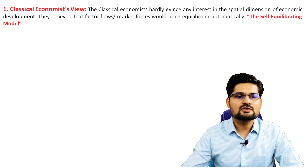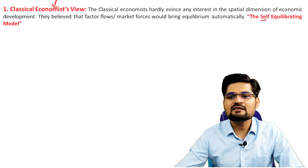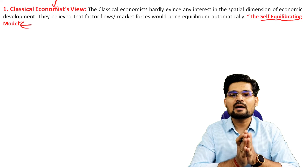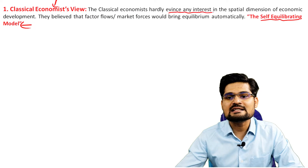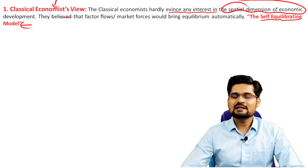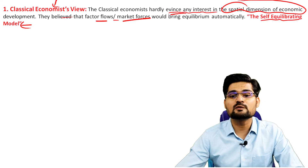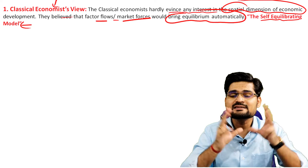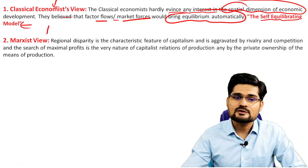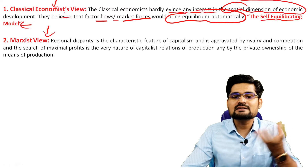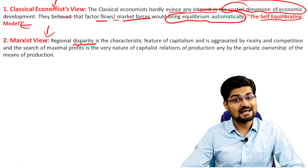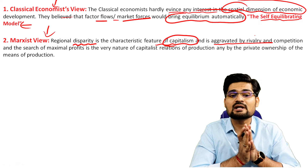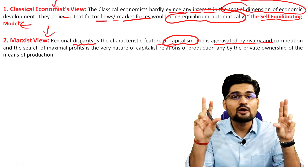The classical economist view is the self-equilibrating model — there is a pattern of self-equilibrium in the market. Classical economists had little interest in the spatial dimension of economic development; they believed that factor flows and market forces would bring equilibrium automatically, with demand and supply balancing each other. Then the social theory — the Marxist view — comes into the picture, where regional disparity is highlighted as a characteristic feature of capitalism, aggravated by rivalry, competition, and the profit maximization motive of the economic man.